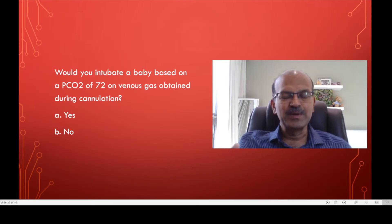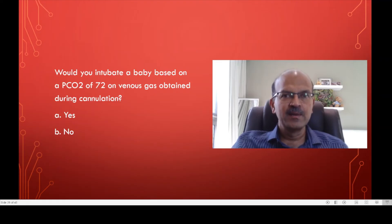The choice is going to be that you would not act on this because it is a venous gas. The CO2 is not predictable. It often goes high because of the nature of the circulation, and you may be squeezing also to get the cannulation. So try to repeat an arterialized capillary gas.